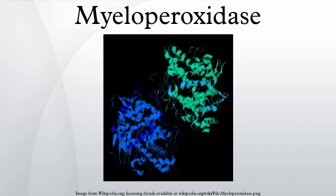Together, the light and heavy chains form two identical 73 kDa monomers connected by a cystine bridge at CYS-153. The protein forms a deep crevice which holds the heme group at the bottom, as well as a hydrophobic pocket at the entrance to the distal heme cavity which carries out its catalytic activity.